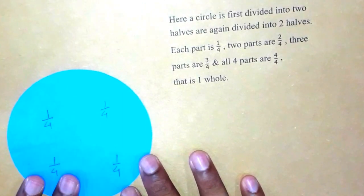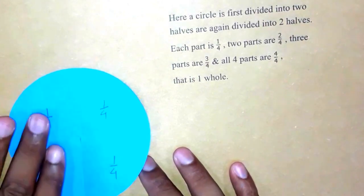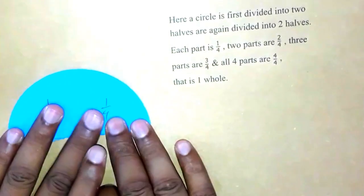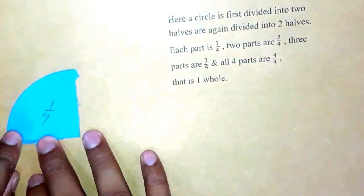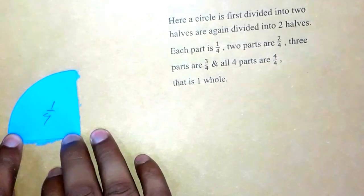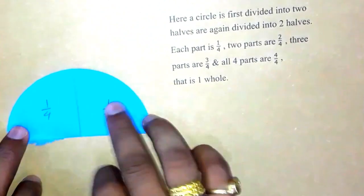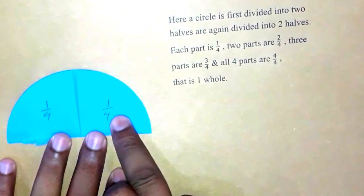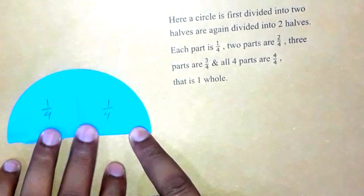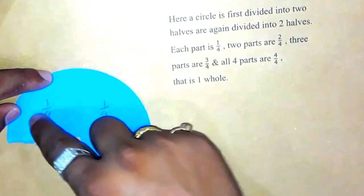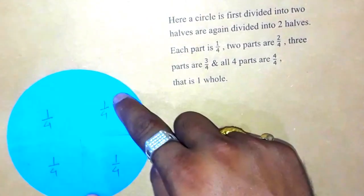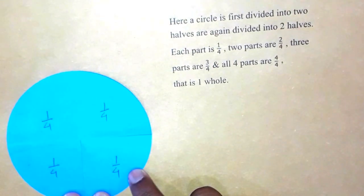Here a circle is first divided into two halves. This is the whole circle — this is one half and this is another half. If the two halves are divided further, you will get four parts, each called one by four — one quarter. So we have the first one quarter, the second one quarter, the third one quarter, and the fourth one quarter. One quarter, two quarters, three quarters, and all four quarters together compose to form one.